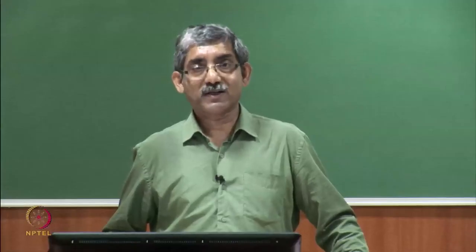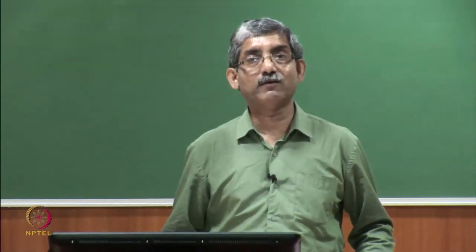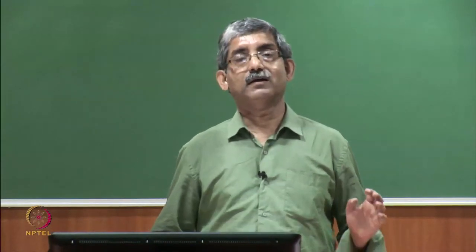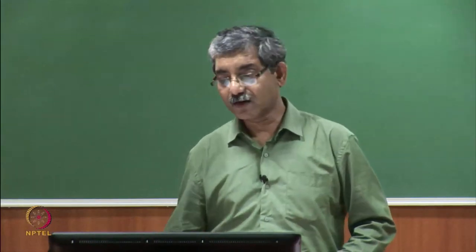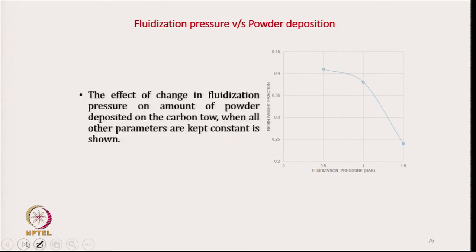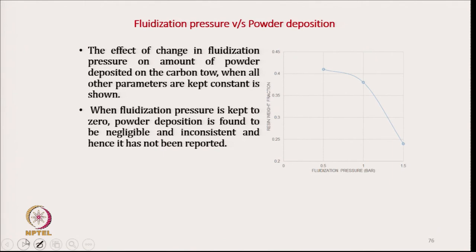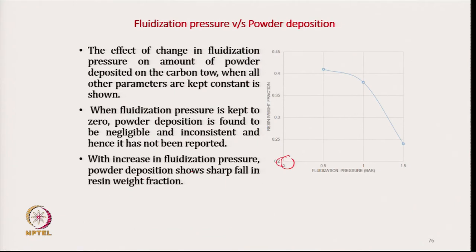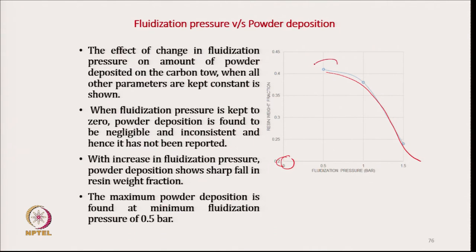Next, the fluidizing pressure was changed from 0.5 bar to 1.5 bar. The diagram shows it consistently reduces — initially at a lower rate, and then at a higher rate. When the fluidizing pressure is 0, there is no powder generation, so powder deposition is negligible. With increase in fluidizing pressure, powder deposition shows a sharp fall in weight fraction. The maximum powder deposition is at 0.5 bar.